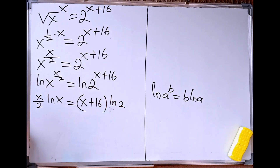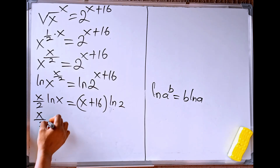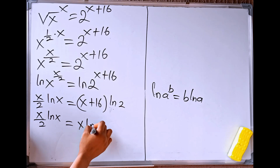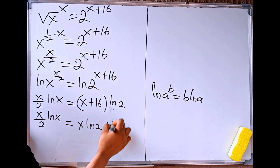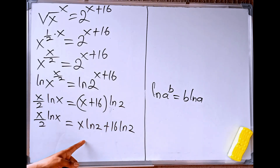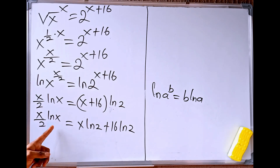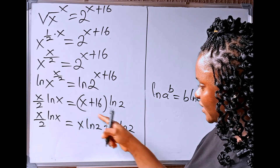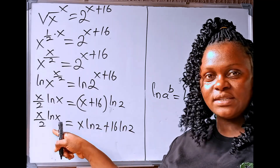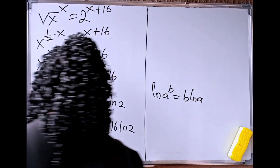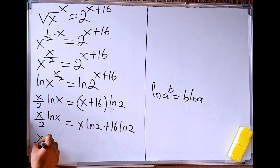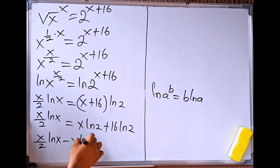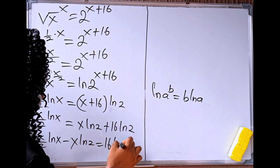We are going to use ln of 2 to open this bracket. We have x divided by 2 times ln of x equals x ln of 2 plus 16 ln of 2. Now, from here, you can see that this one has x and this one has x. So let's take the first part of this expression to this side.